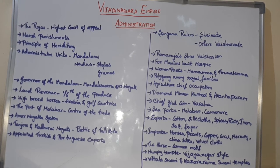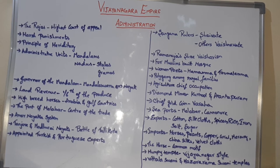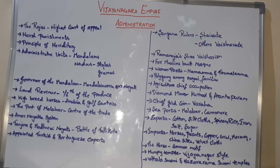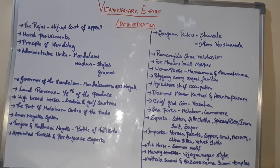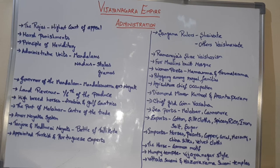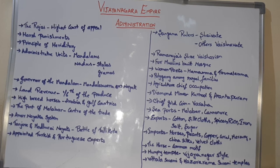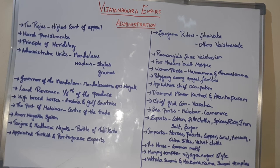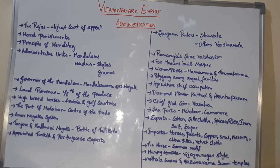They followed the four caste system — the four Varnas: Brahman, Kshatriya, Vaishya, and Sudra.